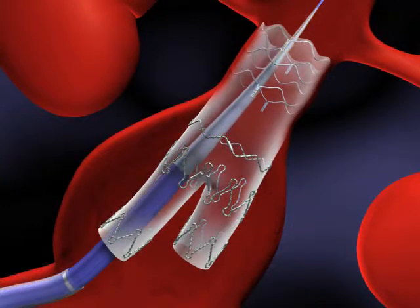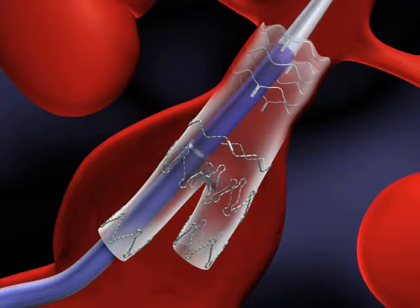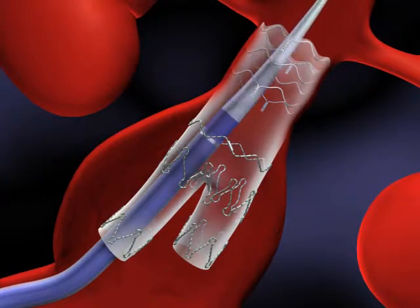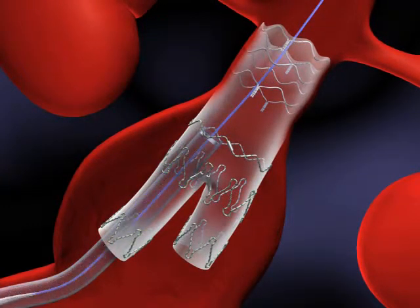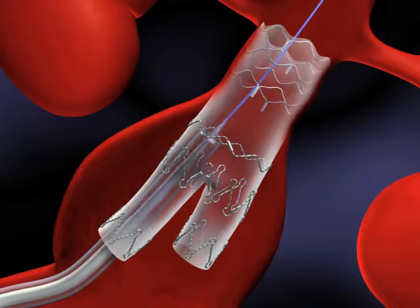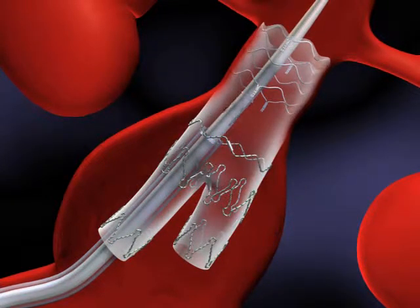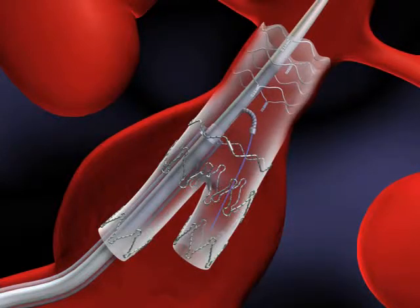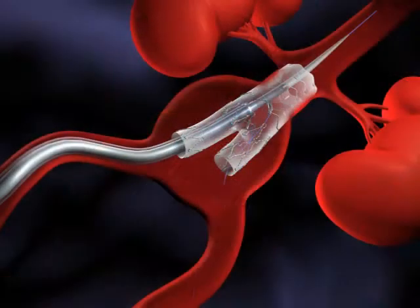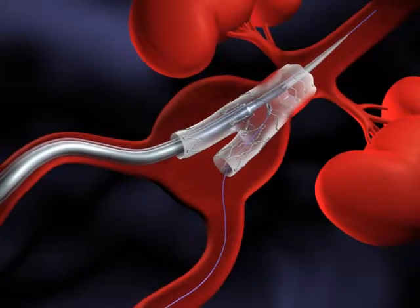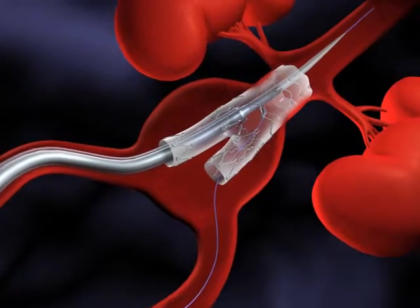The introducer sheath is now repositioned to just above the graft bifurcation and the directional catheter inserted. Retracting the directional catheter sheath and deflecting the tip allows contralateral access and enables the guide wire to be advanced into the iliac artery.